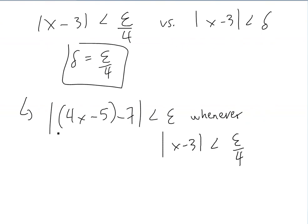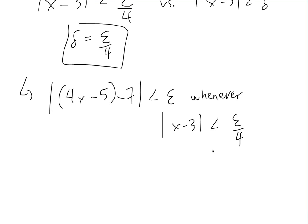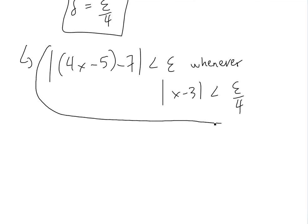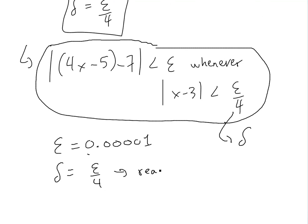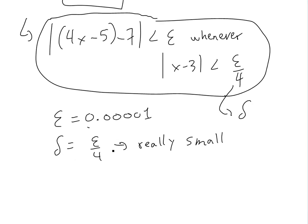Basically, the difference between f(x) — which is 4x minus 5 — and the limit seven is less than epsilon, whenever x minus three is less than epsilon divided by four. So we know delta equals epsilon over four. Regardless of how small epsilon is, say 0.00001, delta is going to be that number divided by four, which is also really, really small.